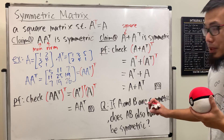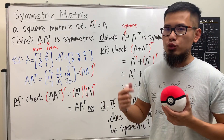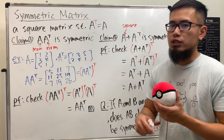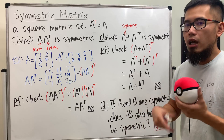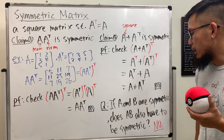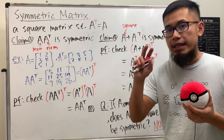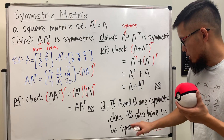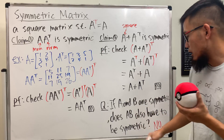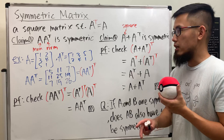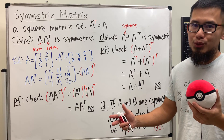The answer is no. Whenever you want to prove something is false, all you need to do is find a counterexample — pick two symmetric matrices A and B, compute their product, and show it isn't symmetric. However, if A and B commute, then A·B will also be symmetric. But without the commutativity property, the statement is false. A·B doesn't have to be symmetric — try it out on your own. Hope you liked these two claims and the question!